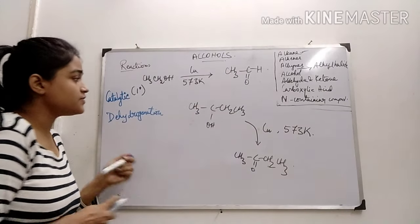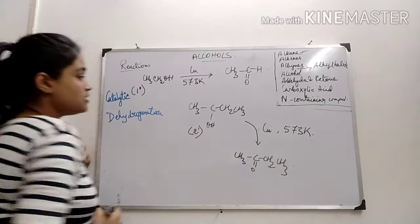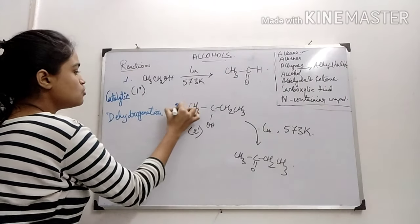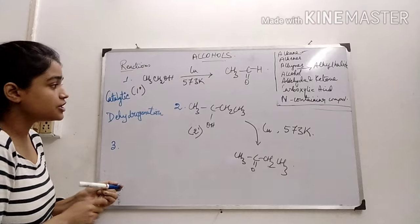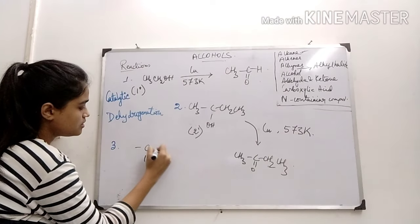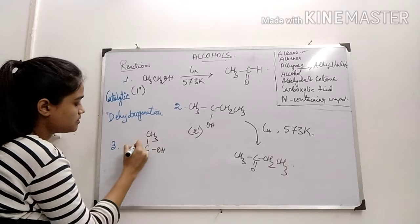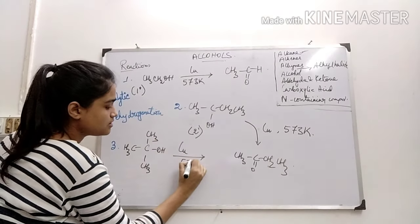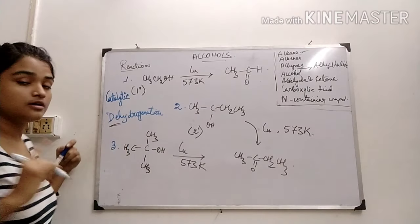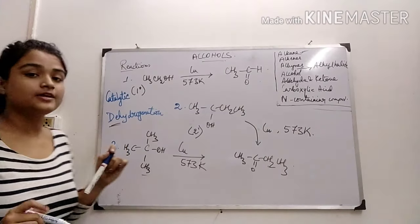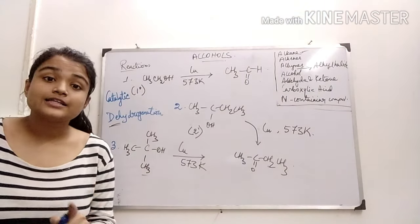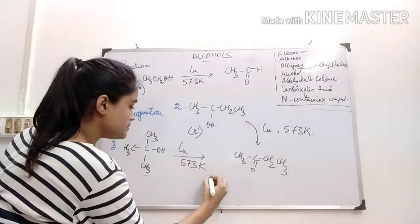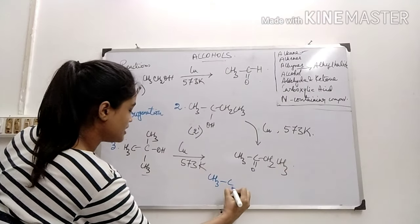Now, this is a secondary alcohol. If I take a tertiary alcohol — since we are doing dehydrogenation, removal of hydrogen — what will happen is that alkenes will be formed. No aldehyde, no ketones; it will directly form alkenes. Basically, it is a dehydration reaction that will take place.